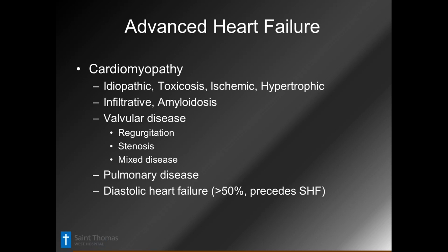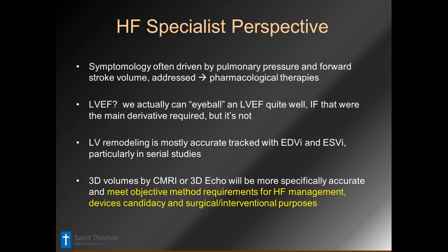The symptomology of heart failure is not driven as much by the EF as it is by what the EF derivative is doing for the body. Symptoms are usually driven more by resistance in the lung from perhaps MR, and the forward stroke volume. If medicines help control pulmonary pressure resistance and improve contractility with inotropes, or remodel the heart with diuretics and ARBs, they're going to improve how the patient feels — and we're obviously here to make the patient feel better.